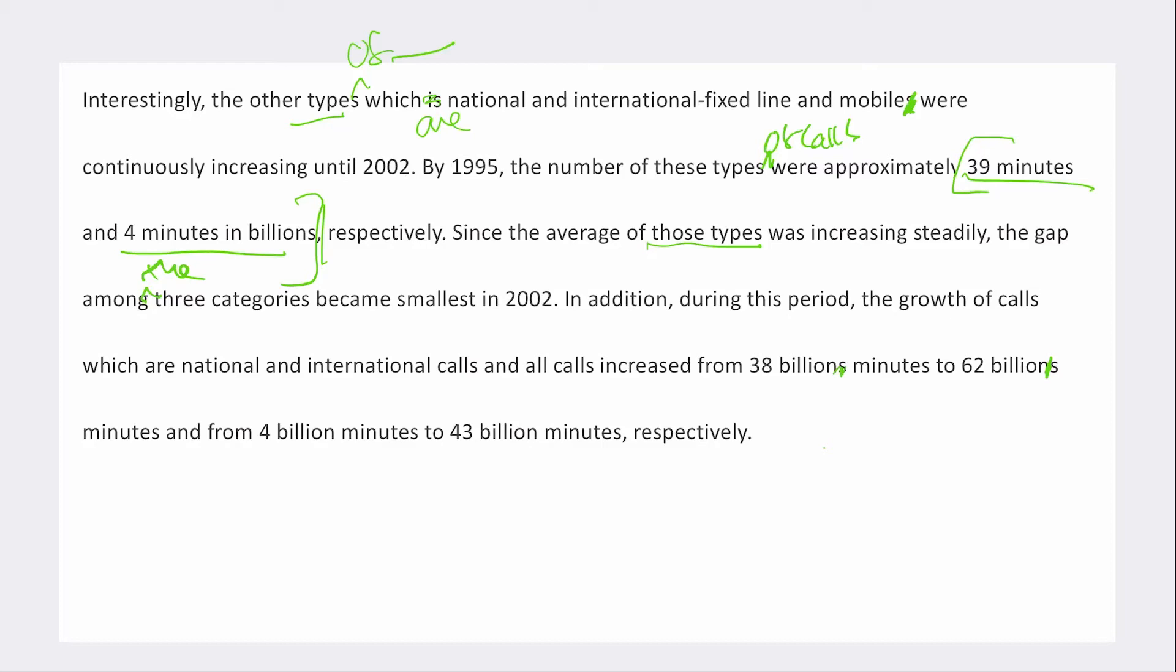So what's confusing to read about this answer is it feels like the candidate's just listing the data that they've got from the graph. So they've taken a sort of listing approach which is very confusing and boring to read. So what you really need to have at the start of each paragraph, the same as task two, is you need to have a strong topic sentence where you tell me what detail you're going to give me in this paragraph.